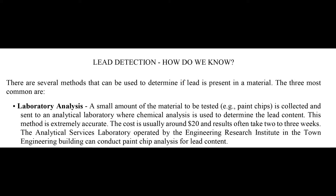Lead detection — how do we know? There are several methods that can be used to determine if lead is present in a material. The most common is laboratory analysis. A small amount of material, such as paint chips, is collected and sent to an analytical laboratory where chemical analysis determines the lead content. This method is extremely accurate. The cost is usually around $20 and results often take two to three weeks. The analytical services laboratory operated by the Engineering Research Institute in the Town Engineering Building can conduct paint chip analysis for lead content.